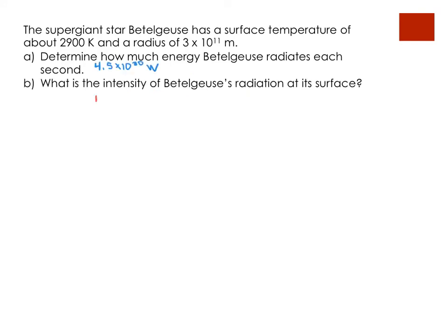Part B. What is the intensity of Betelgeuse's radiation at surface? Intensity, power over area. So, if I go ahead and I use our value from part A, divide by area, 4 pi r squared again. I'll get the intensity of 4 times 10 to the power of 6. Notice the intensity in this case would also just be the Stefan-Boltzmann constant times the temperature to the power of 4.